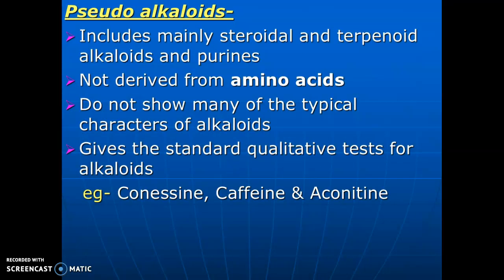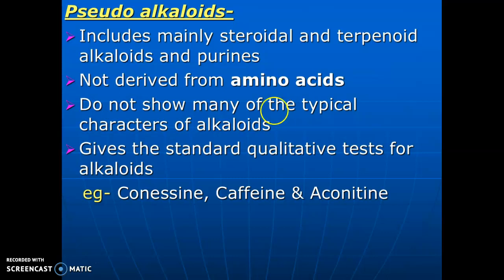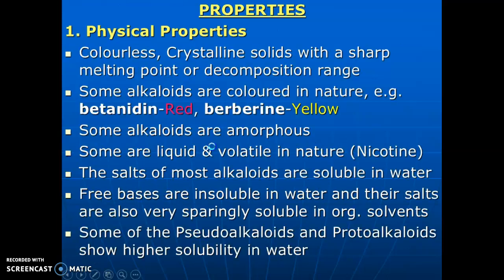Pseudo-alkaloids — that is, false alkaloids — include mainly steroidal and terpenoidal alkaloids and purines. They are not derived from amino acids and do not show many of the typical characteristics of alkaloids. The standard qualitative tests for alkaloids are negative for pseudo-alkaloids. Examples are coniine, caffeine, and aconite.